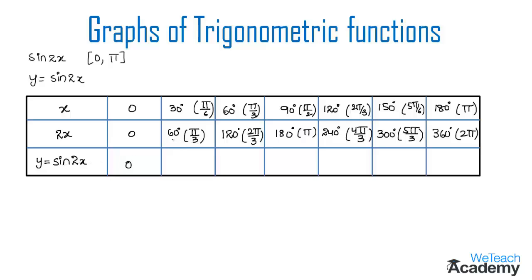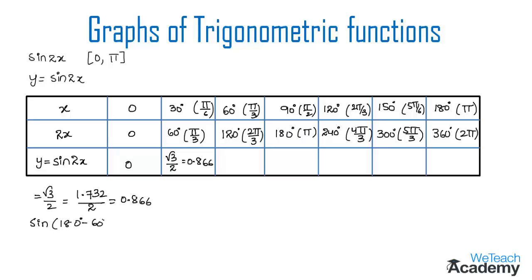Next, by substituting 60 degrees we get sin 60 degrees, and the value of sin 60 is root 3 by 2, which is 1.732 divided by 2, giving us 0.866. Then by substituting 120 degrees we get sin 120, which equals sin(180° − 60°). Using the identity sin(180° − θ) = sin θ, we get sin 60° = root 3 by 2, which is 0.866.